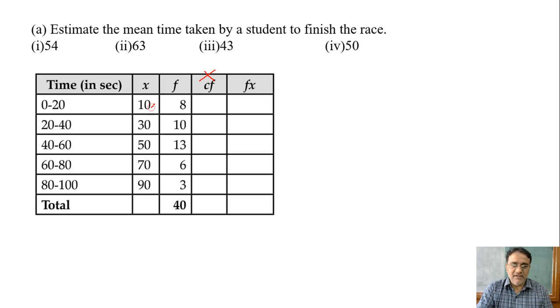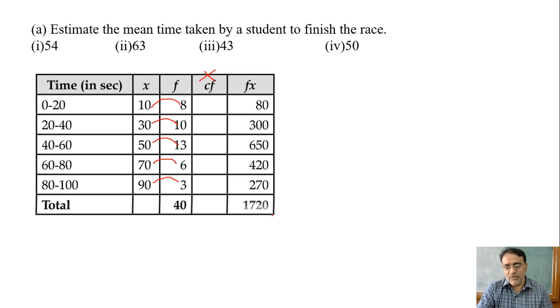So fx, right? We can multiply directly: 80, 300, 450, 420, 270. Then we have to add. So if we add we'll get 1720.